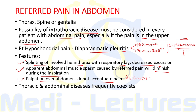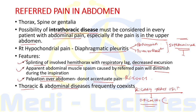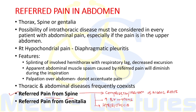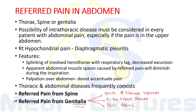It must be kept in mind that thoracic and abdominal diseases can coexist — for example, a patient with known biliary tract obstruction can develop epigastric pain due to a newly developed myocardial infarction. Referred pain from the spine is due to compression or irritation of nerve roots; it increases with coughing, sneezing, and straining, and is associated with hyperesthesia over the involved dermatomes. Referred pain from genitalia — from the testis and seminal vesicles — increases with slight pressure on these organs and is usually a dull aching abdominal pain.